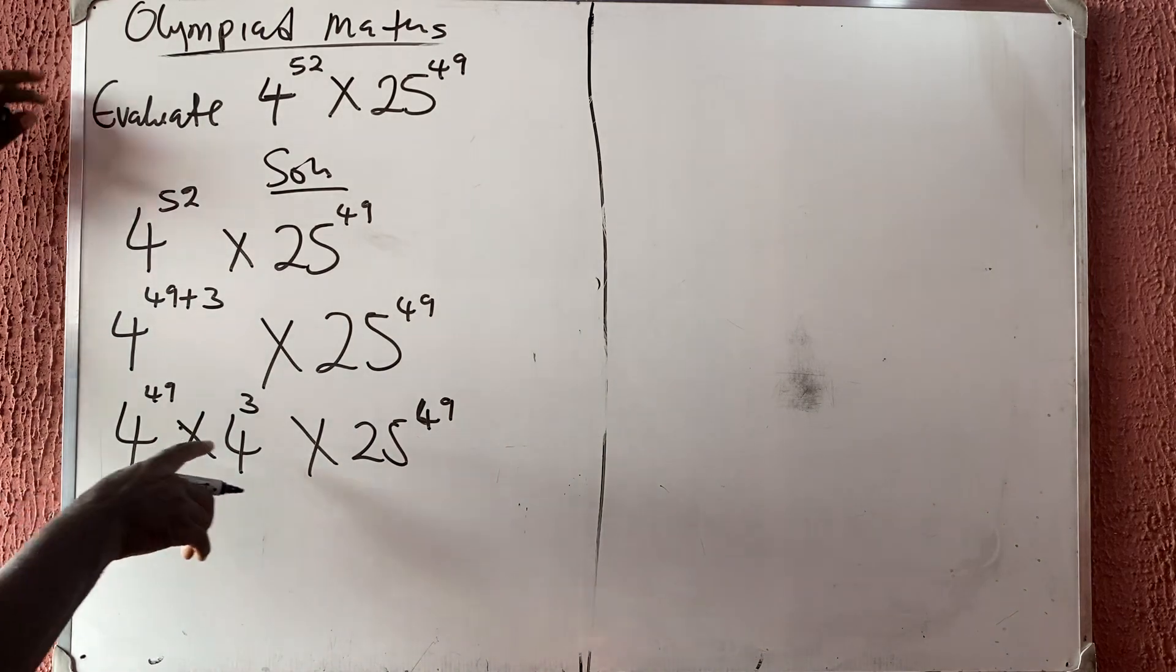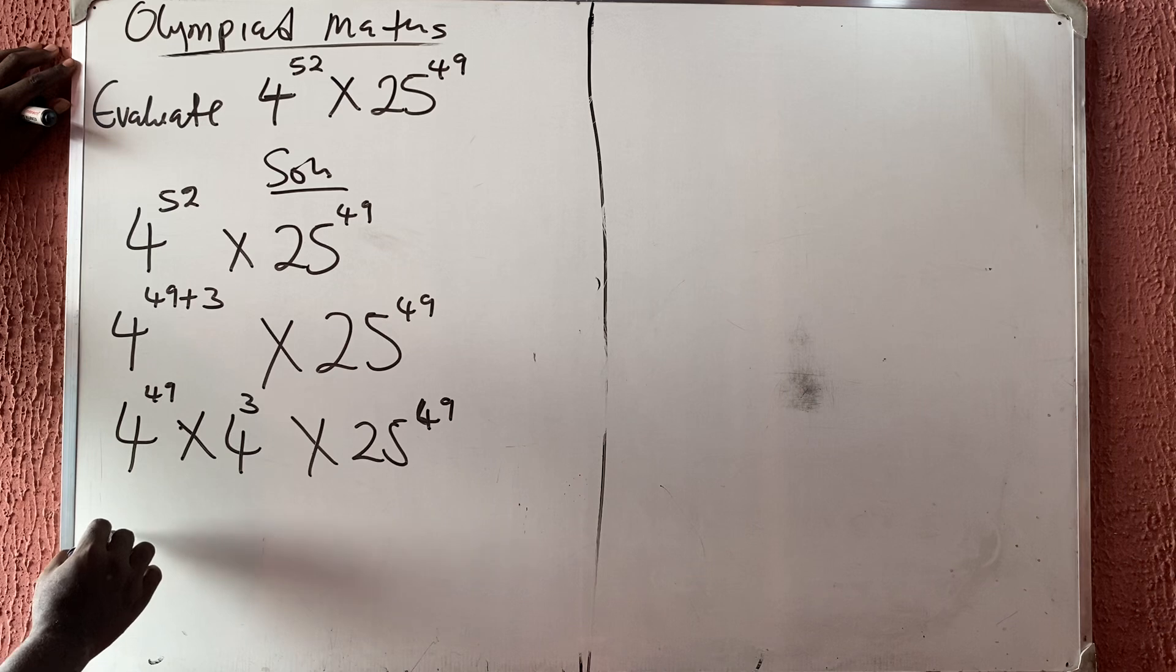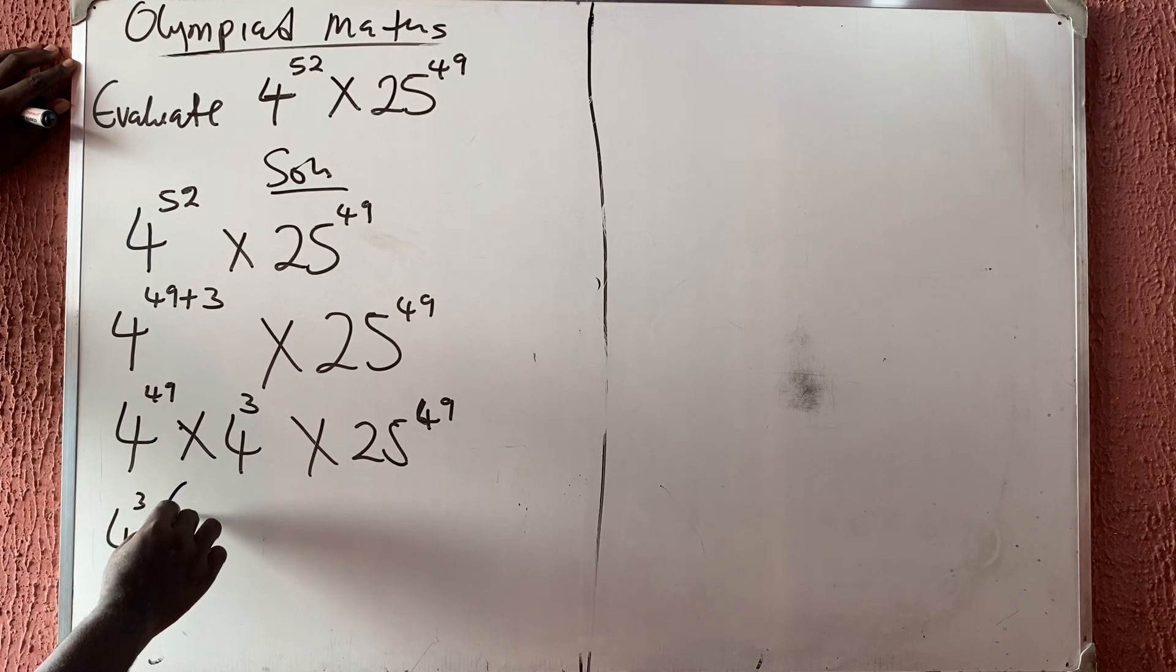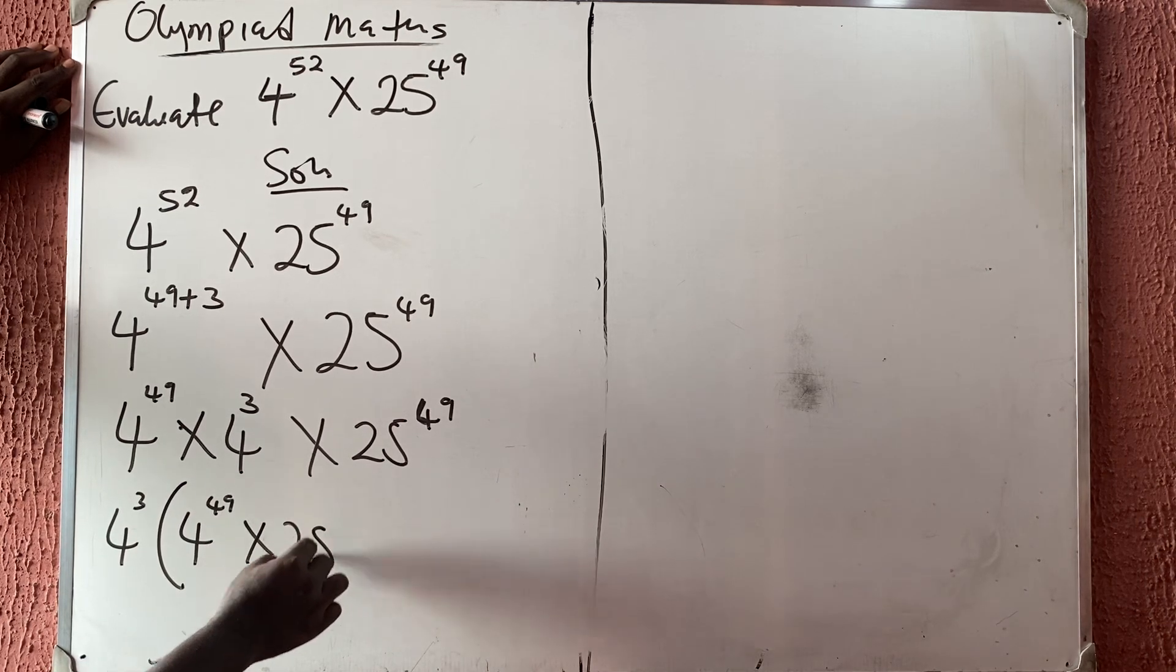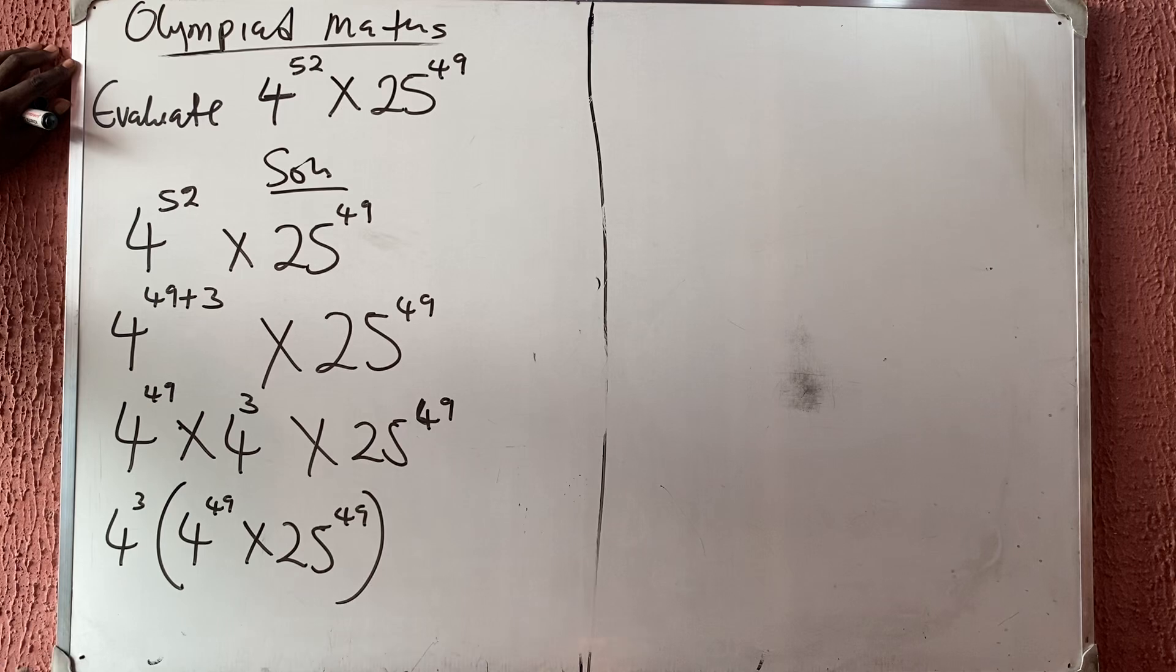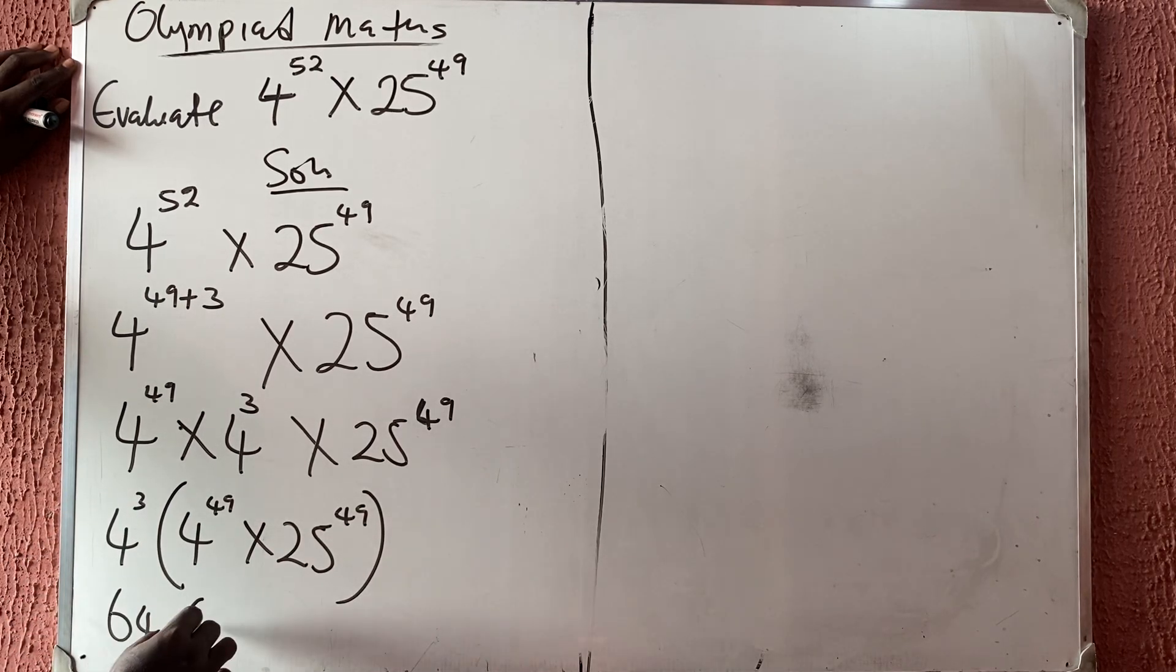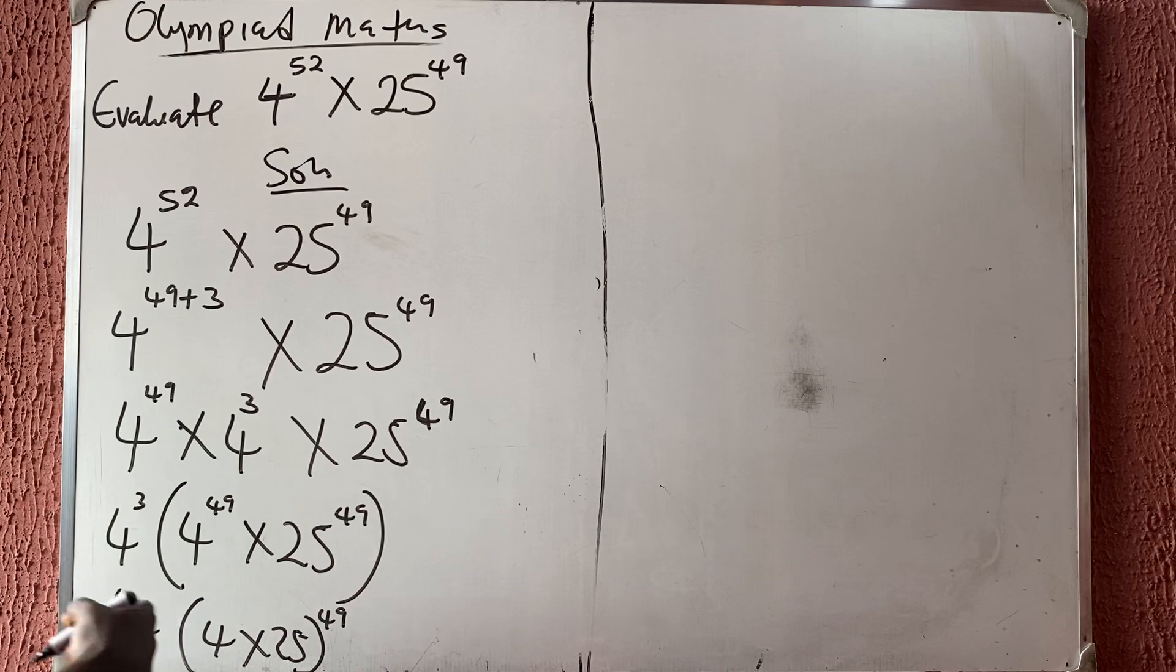So now what do we do? This one is something like 64. So let me have 4 raised to power 3 into 4 raised to power 49 times 25 raised to power the same 49. So here is 64 into, this is 4 times 25, and everything will be raised to power 49. They have 49 in common.